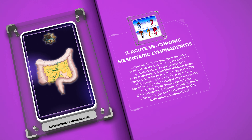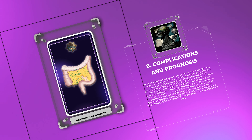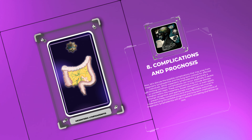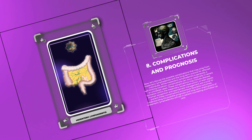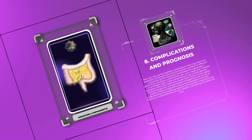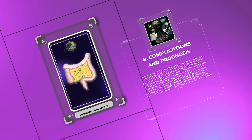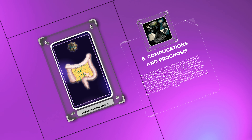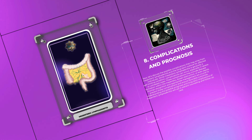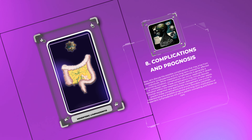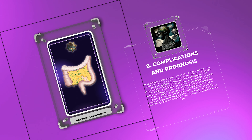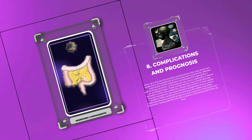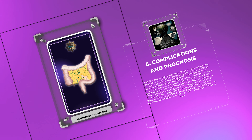Let's discuss the possible complications that may arise from mesenteric lymphadenitis and the long-term outlook for affected individuals. While mesenteric lymphadenitis is generally a self-limiting condition, complications can occur, especially in severe or untreated cases. These complications may include abscess formation within the mesentery, bowel obstruction, or even sepsis. Prompt recognition and appropriate management are crucial to prevent these complications and ensure favorable outcomes. Understanding the possible prognosis and long-term implications will aid in patient counseling and follow-up care.